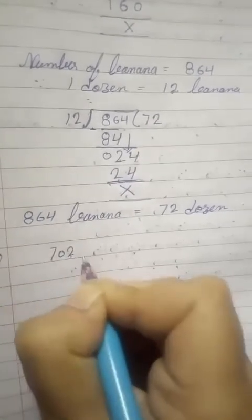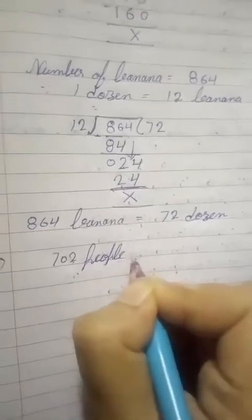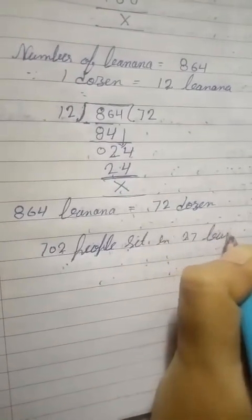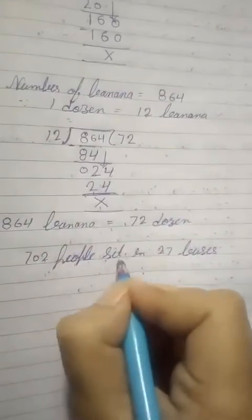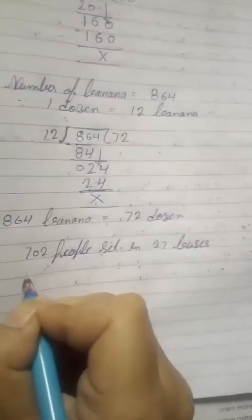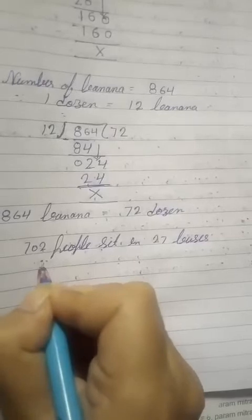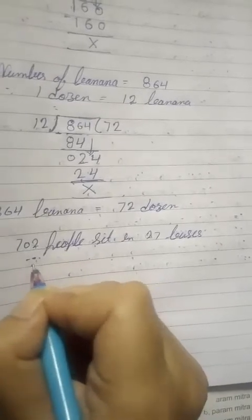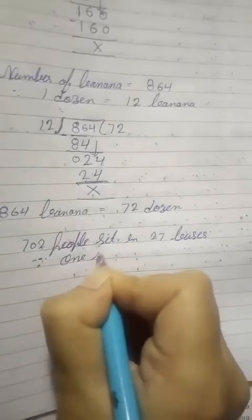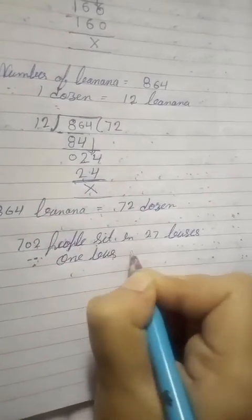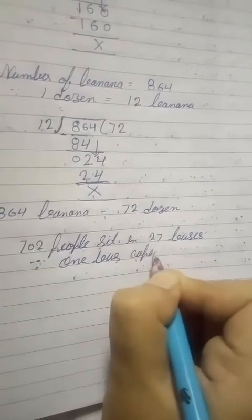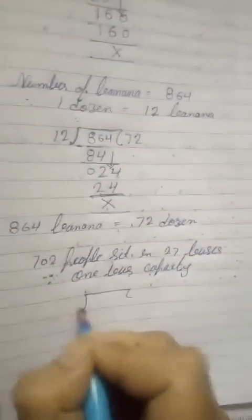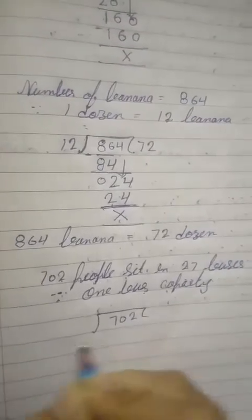Question 5 is: 702 people can sit in 27 buses. How many people can sit in one bus? If 27 buses can seat 702 people, then how many people can sit in one bus? First, write the statement of this question.